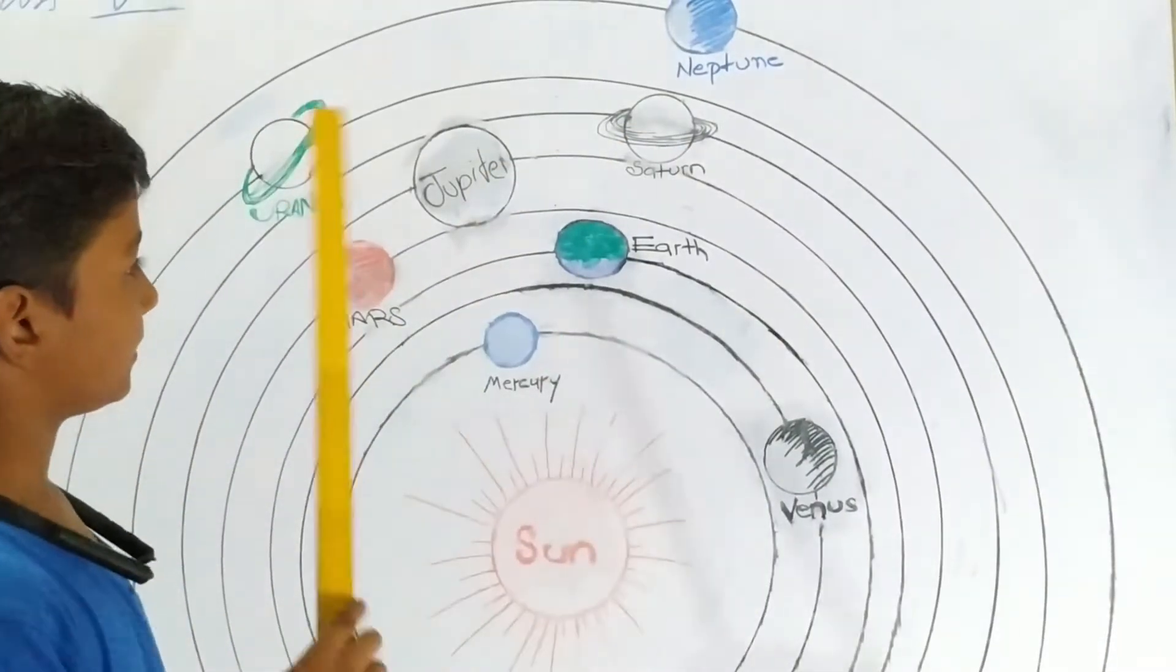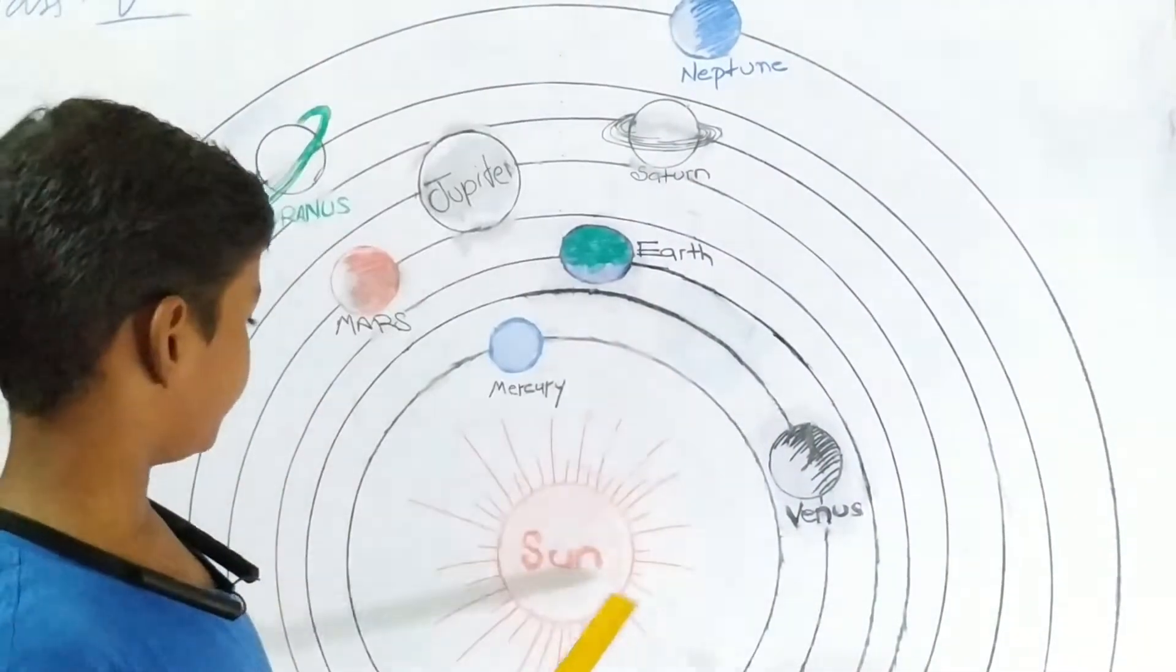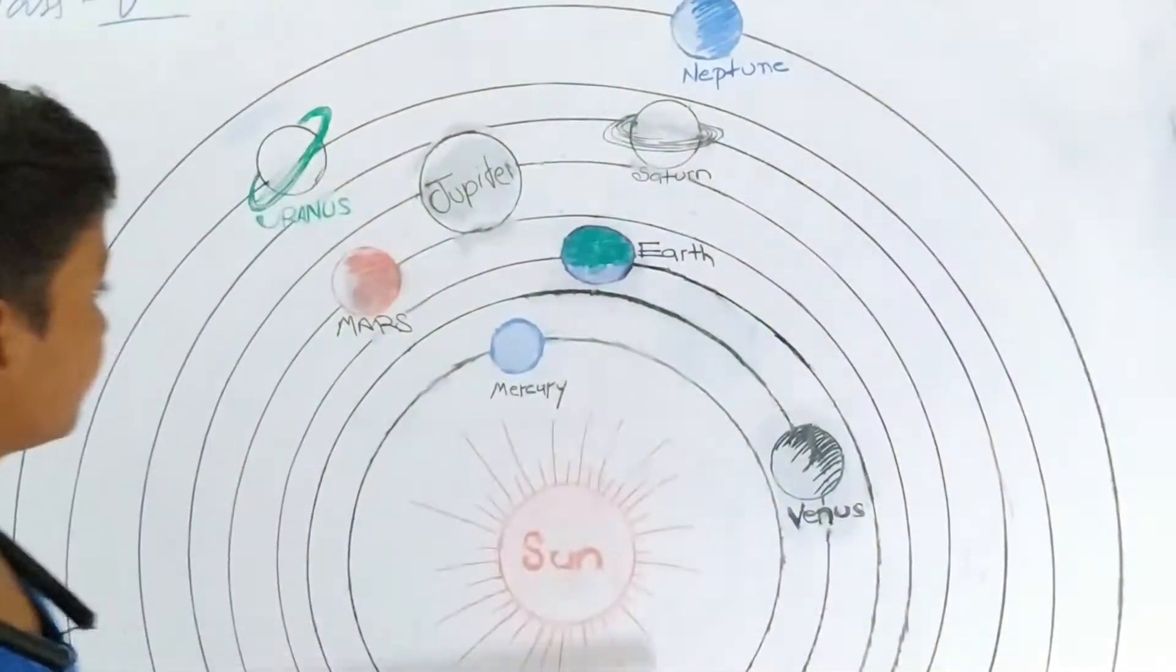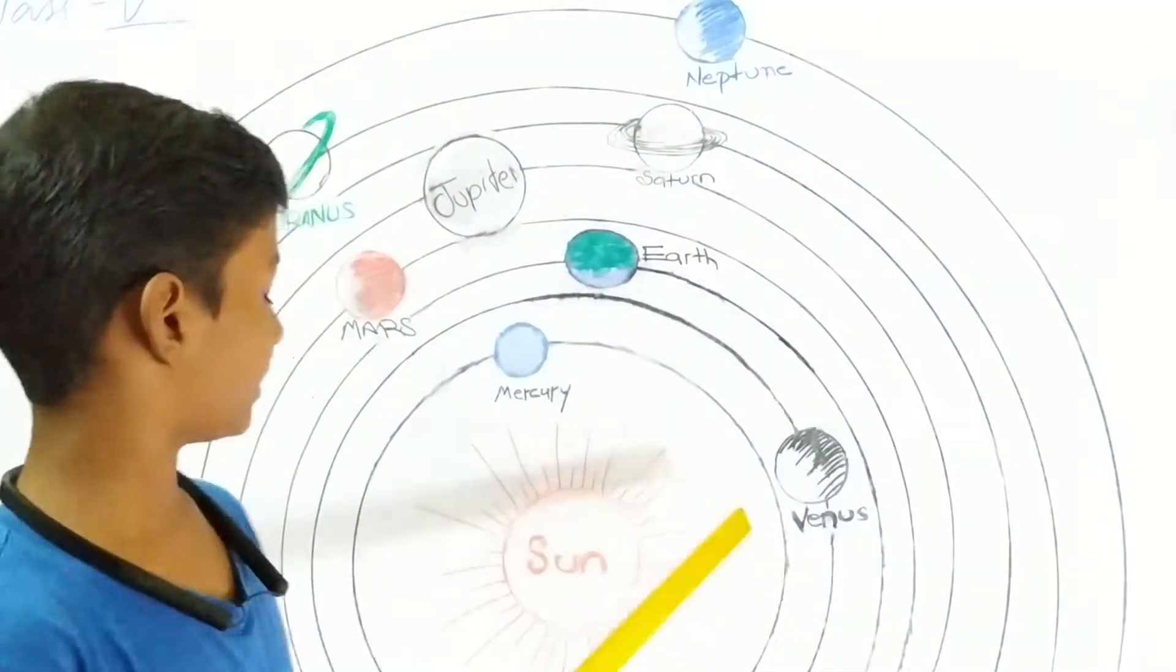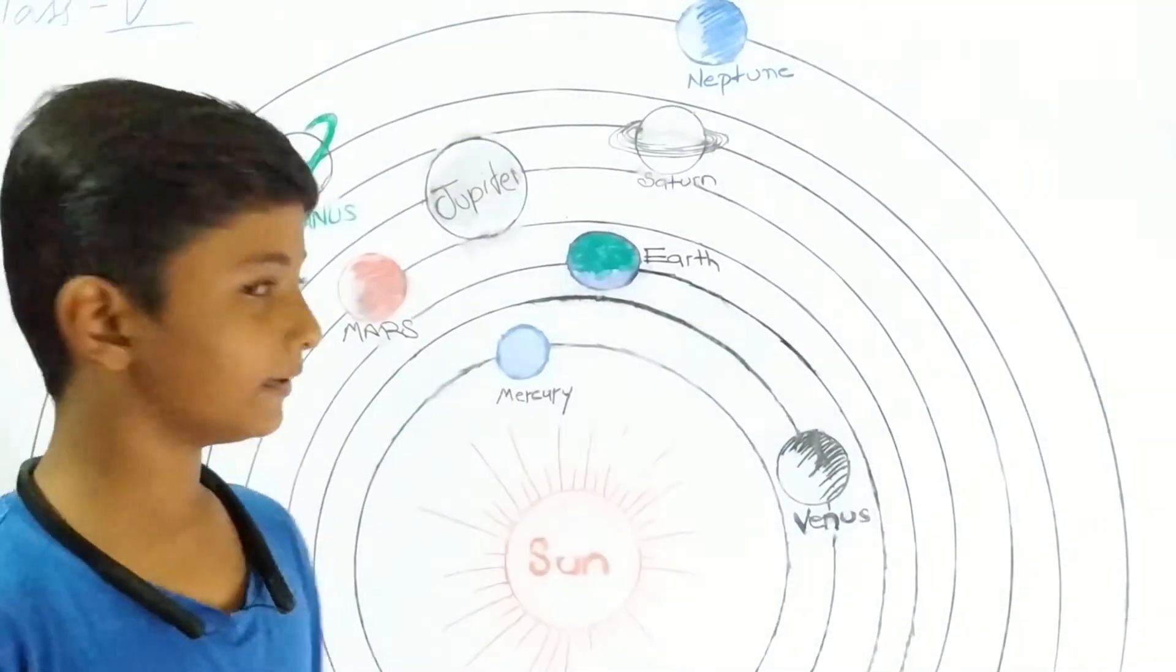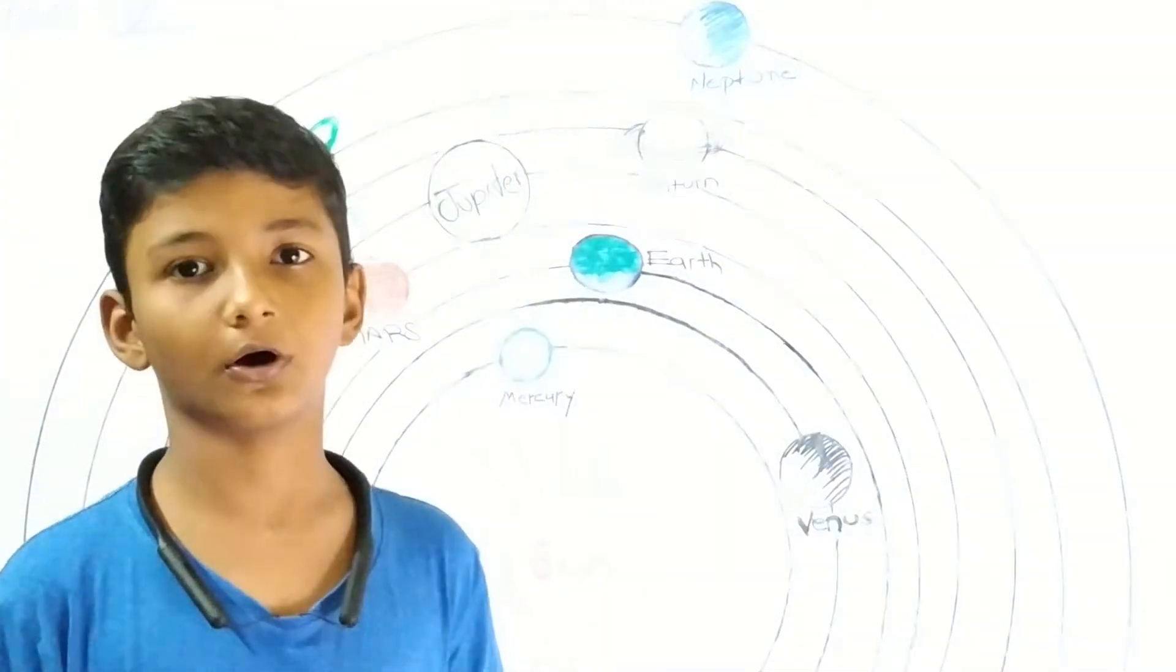Planets are spherical celestial bodies that move around the Sun. This movement is called revolution. Each planet revolves around the Sun in a definite path. This path is called the orbit of the planet.